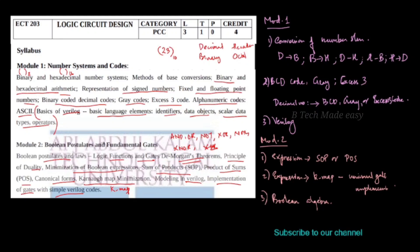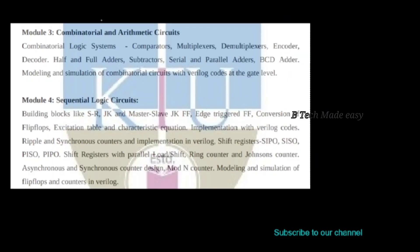We will go to the third module now. Module 3 covers combinational circuits. If there are a few functions together, we use combinational logic. The components include comparators, multiplexers, demultiplexers, encoders, and decoders.